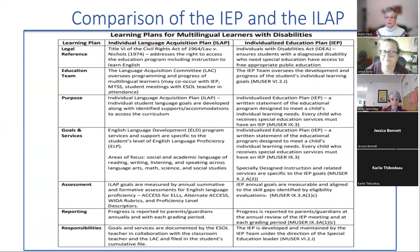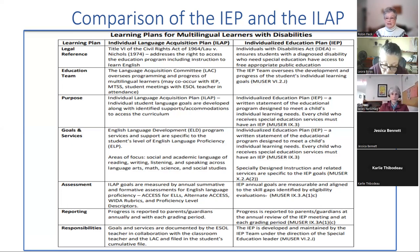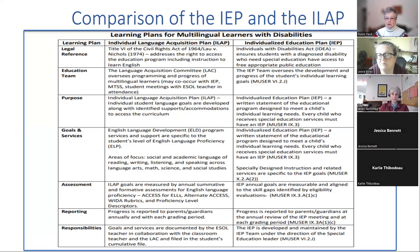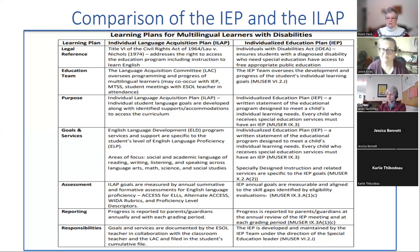Just a note since we are in the ACCESS testing window: a student would only be taking the Alternate ACCESS if they have alternate assessments written in an IEP, and that is noted in Synergy. A student would only be using accommodations for their ACCESS testing if those accommodations are written in a student's IEP. If there are questions about that, we can talk about it at the end.